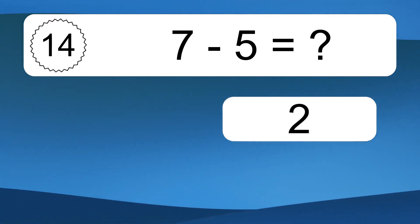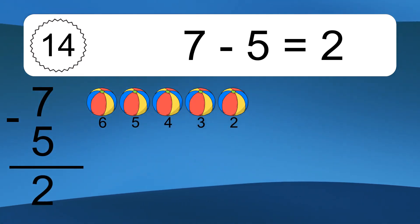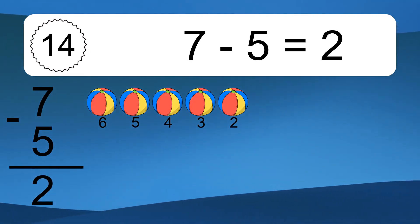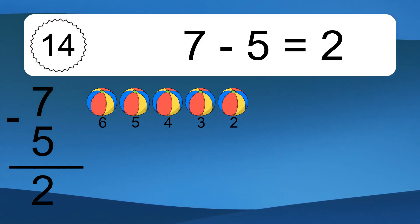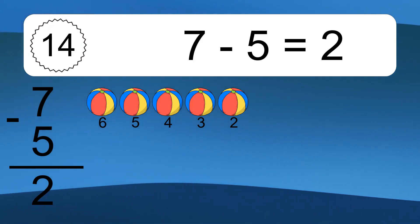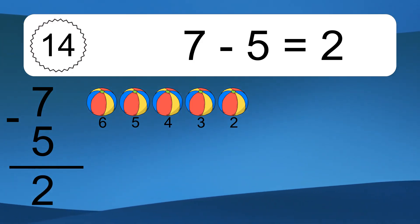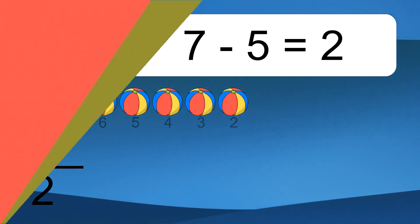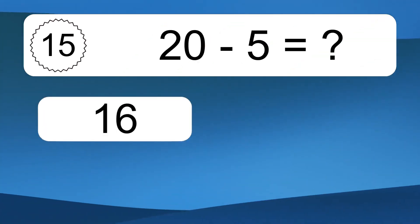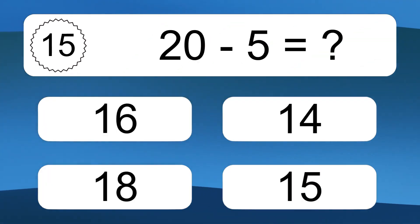7 minus 5 equals 2. Let's count it: 6, 5, 4, 3, 2. 20 minus 5 equals what?